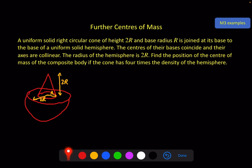That's exactly what we had on the previous screen. If the hemisphere has a density of rho, then the cone has a density of 4 rho. And because it's a density, to find the mass of each piece I have to multiply by the volume.